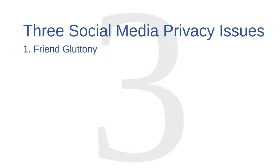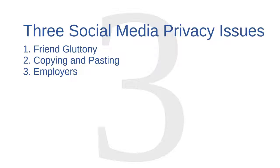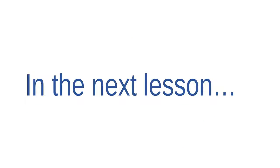Let's review. In this lesson we discussed three social media privacy issues: friend gluttony, copying and pasting, and issues with employers. In the next lesson, we'll discuss how these privacy trade-offs on social media can lead to trade-offs in personal security. In particular, we'll look at how burglars use social media to choose their targets and how some cyber attackers use social media to spread malware to users.